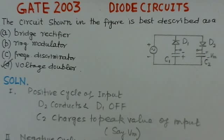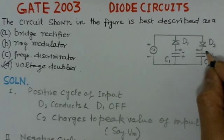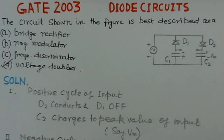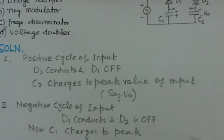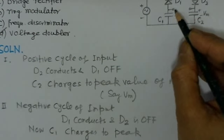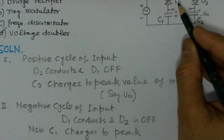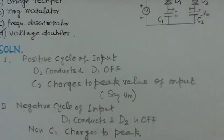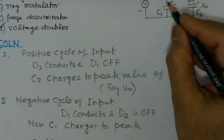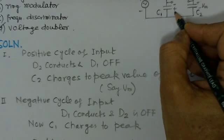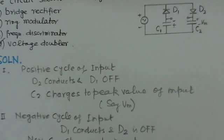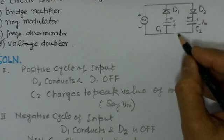As usual, we will start with the positive cycle of the input. When the positive cycle is applied, D2 will conduct and D1 will be off. When D2 conducts, capacitor C2 will charge to the peak of the input. Say Vm is the peak, so the capacitor will be charged with this polarity to Vm.